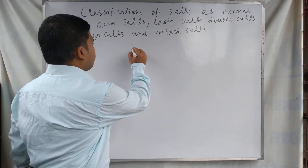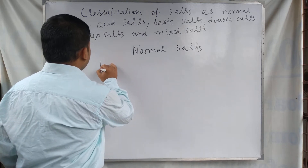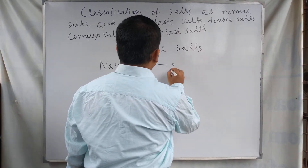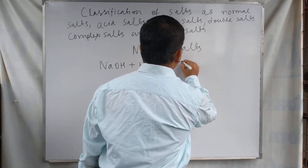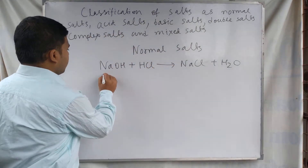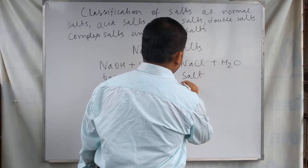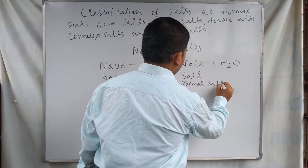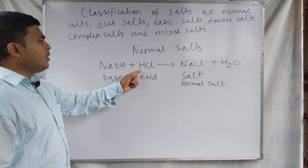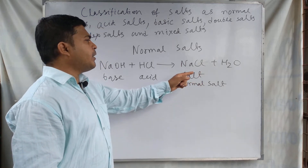The salts are classified as normal salts. In the case of normal salts, they are formed by the complete replacement of all the hydrogen atoms of the acid. For example, hydrogen chloride (hydrochloric acid) and sodium hydroxide react together to form sodium chloride and water. This is a base and this is an acid — acid and base react together to form a salt, and this is called a normal salt.